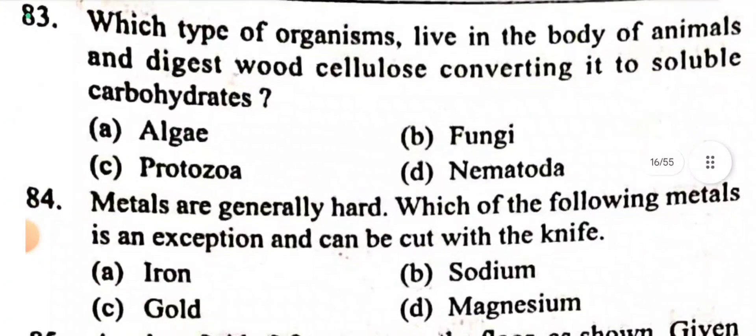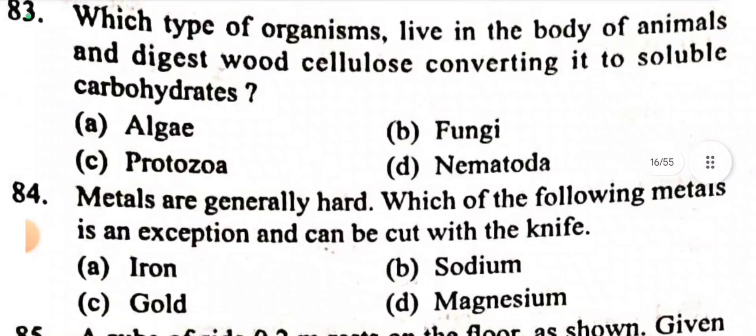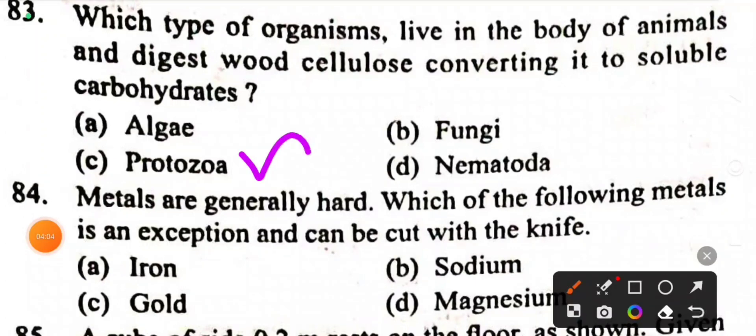Question 83: Which type of organism live in the body of animals and digest wood cellulose converting it to soluble carbohydrates? Answer: protozoa.